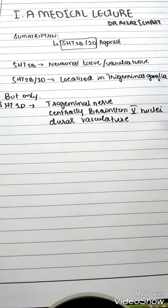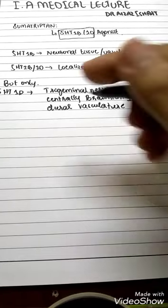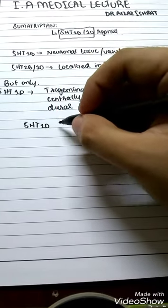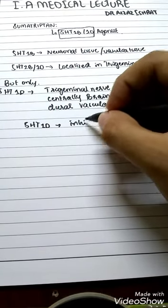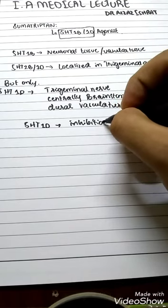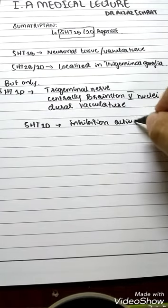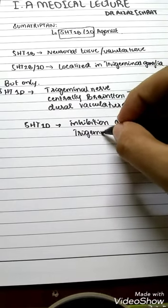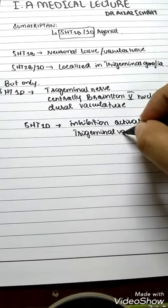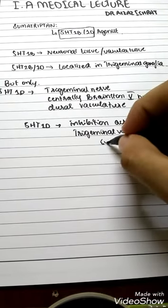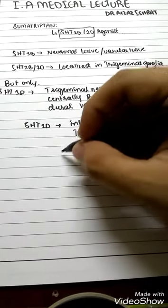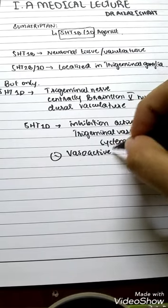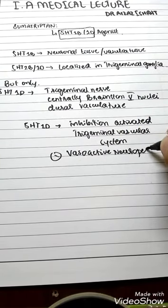So what is 5-HT doing? 5-HT 1d causes the inhibition of the activated trigeminal system, meaning it is inhibiting the release of the vasoactive neuropeptide.